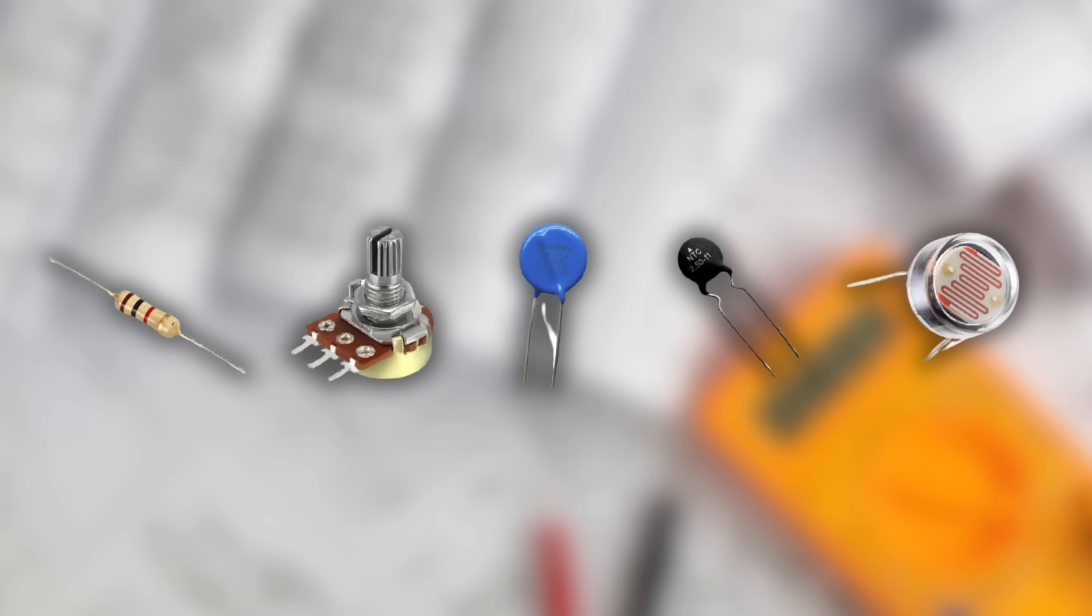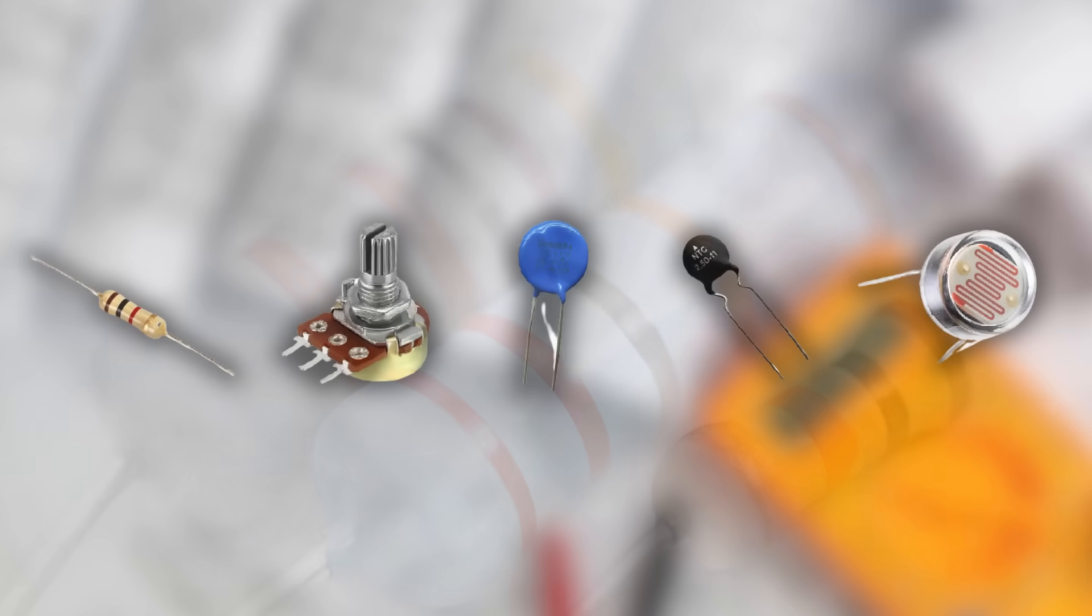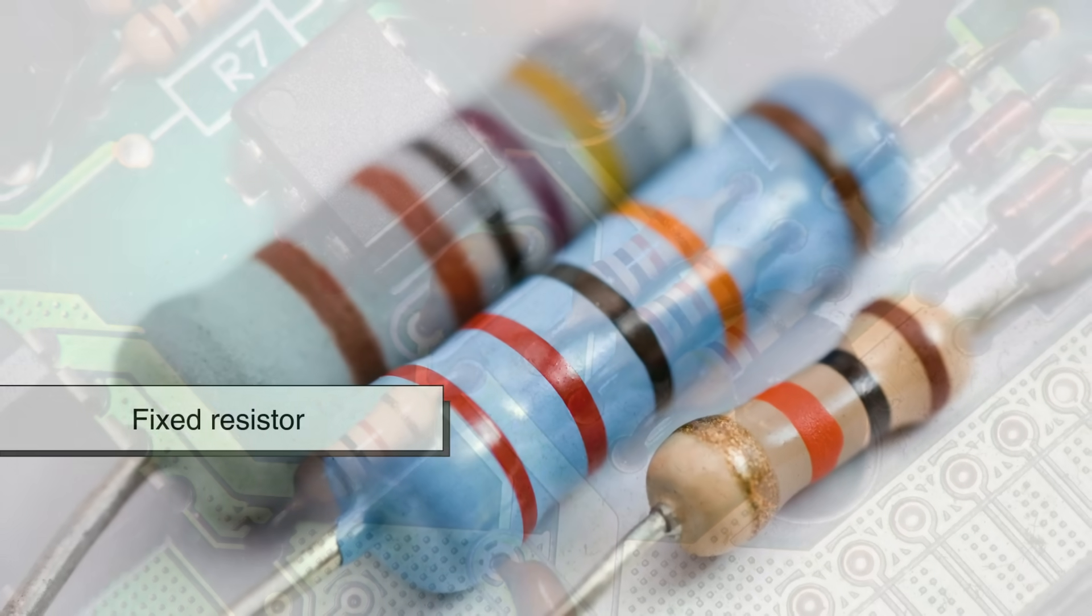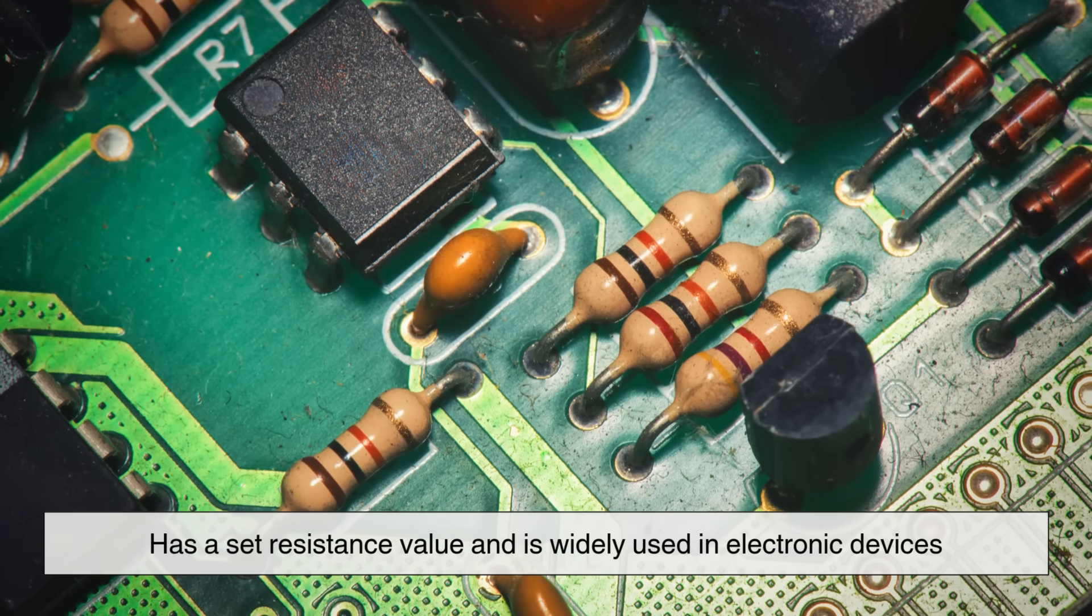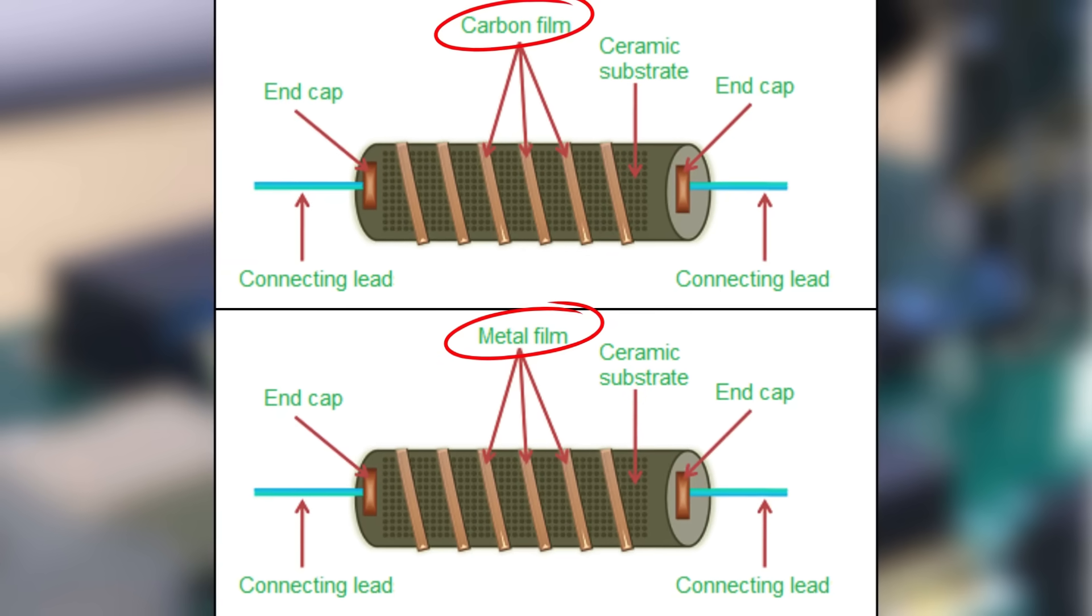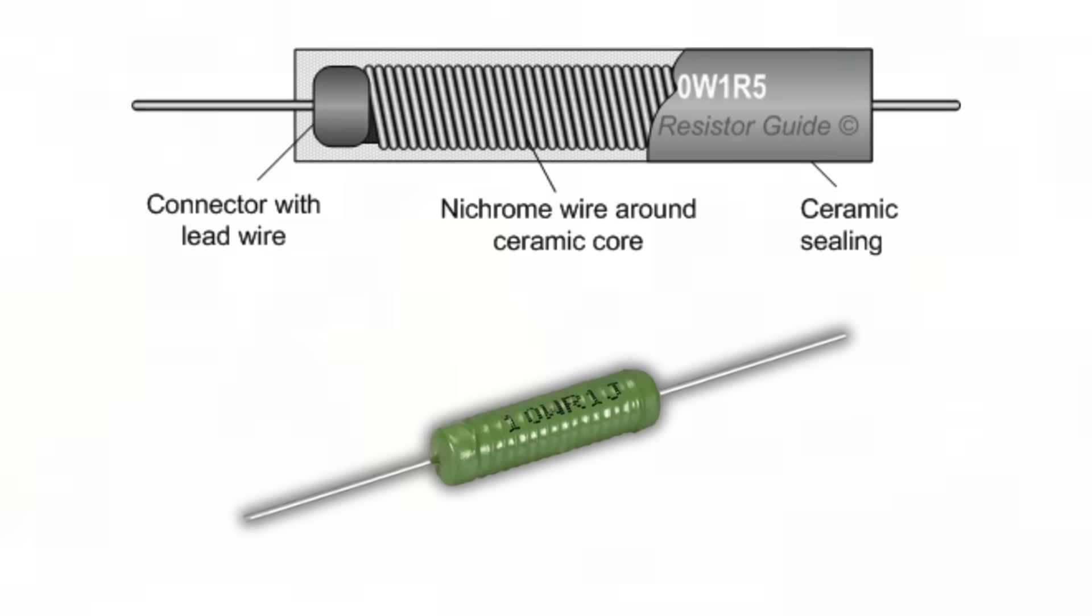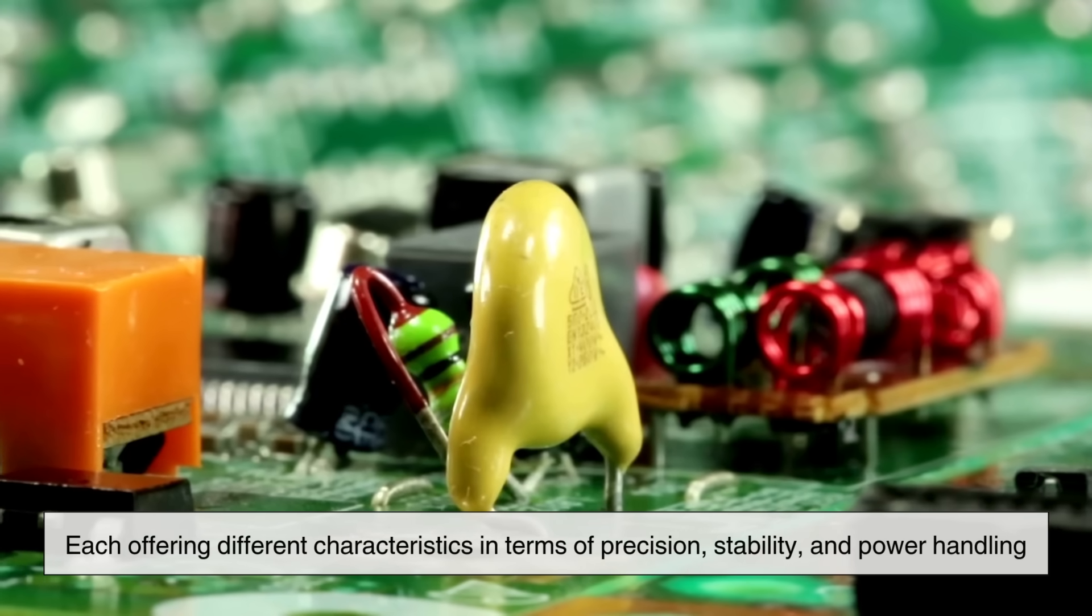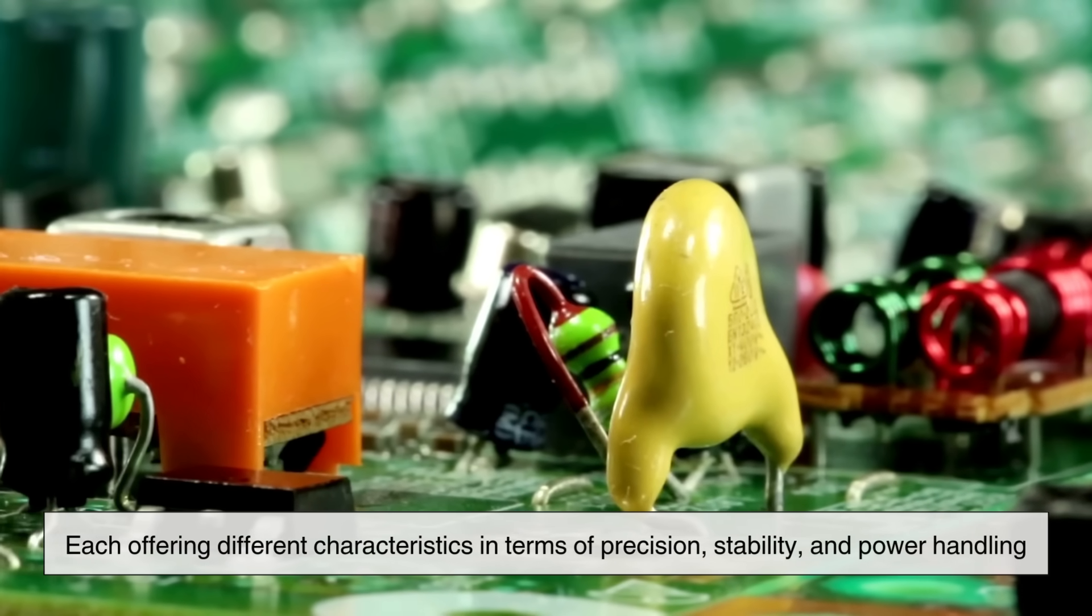Resistors come in various types, each designed for specific applications. The most common type is the fixed resistor, which has a set resistance value and is widely used in electronic devices. These resistors are often made from carbon film, metal film, or wire-wound materials, each offering different characteristics in terms of precision, stability, and power handling.